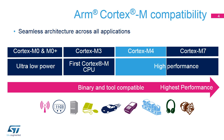All Cortex-M CPUs have a 32-bit architecture. The Cortex-M3 was the first Cortex-M CPU released by ARM. Then ARM decided to distinguish two product lines — high-performance and low-power — while maintaining compatibility between them.